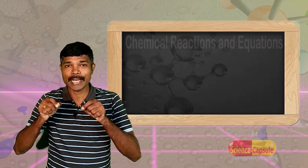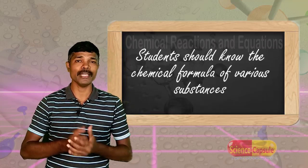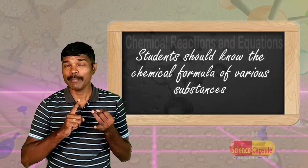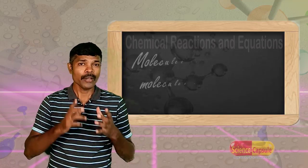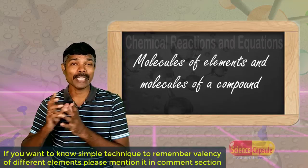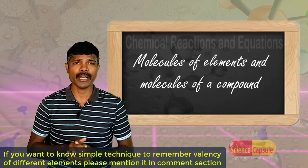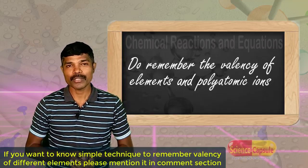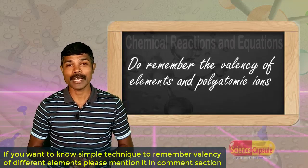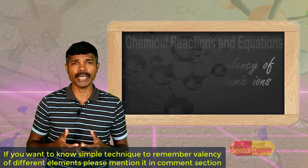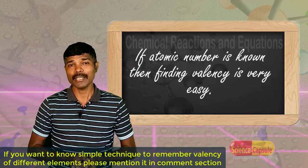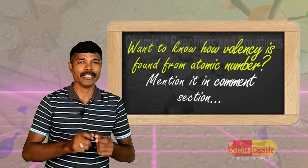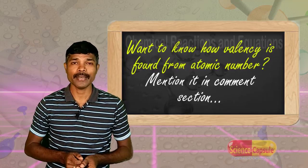In order to understand the first chapter, you must have some basic knowledge from class 9. The basic knowledge of chemical formulas of various substances, what is a molecule of an element and what is a molecule of a compound — these things must be understood. Knowledge about valency and atomic number is equally important to learn the chemistry portions of class 10.